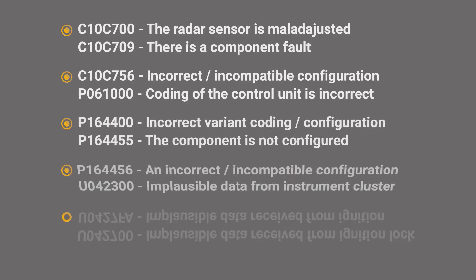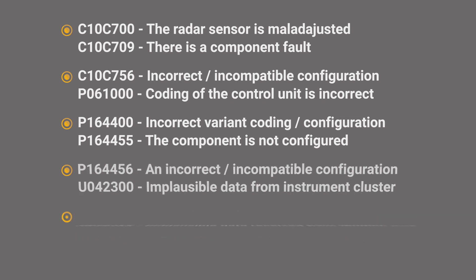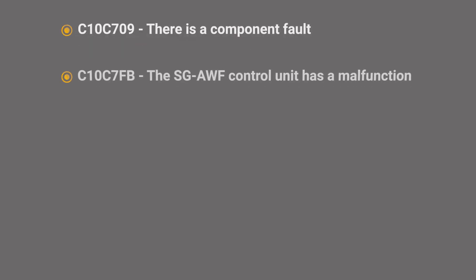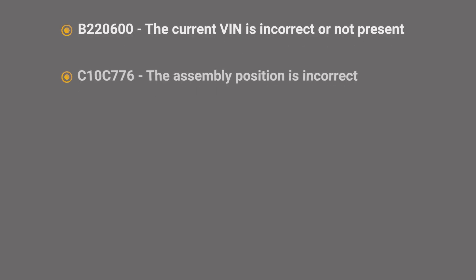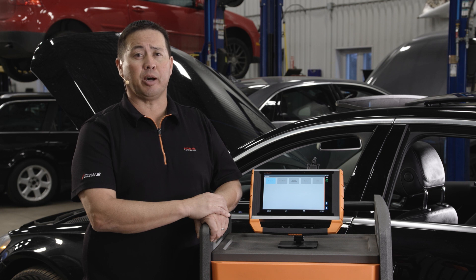If the vehicle has certain fault codes, you must reset the module using SCN coding and calibration. If it has other fault codes, you will need to replace the control module. If the vehicle has additional fault codes, you will need to check for a software update.